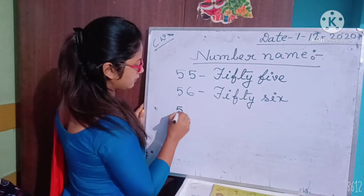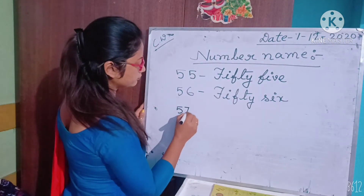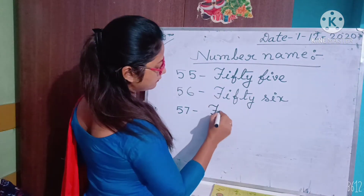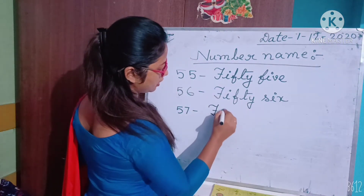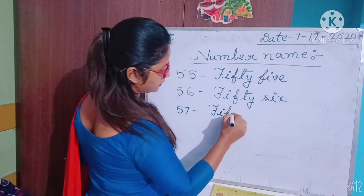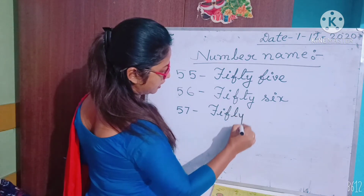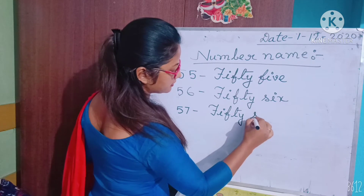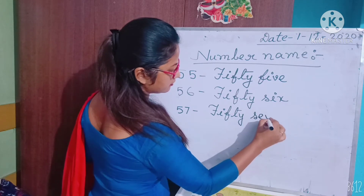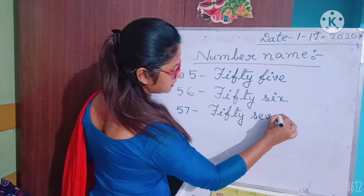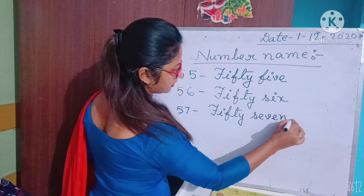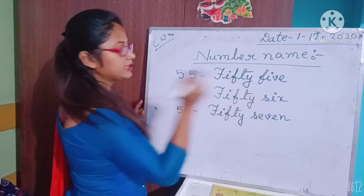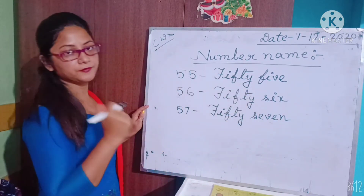Now fifty seven. Fifty — you know the spelling — F-I-F-T-Y — fifty. Seven: S-E-V-E-N. Fifty seven.